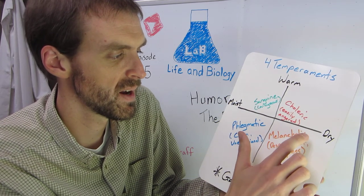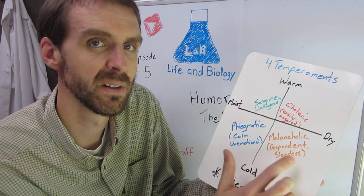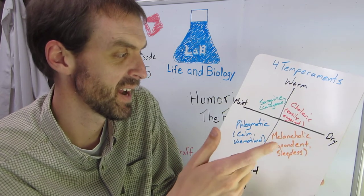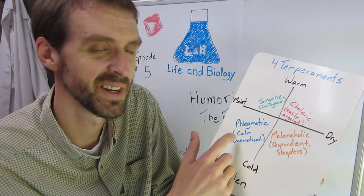You can also have melancholic, which is despondent or sleepless. And then cold and moist was phlegmatic. Who knows how to say it? But this would be calm and unemotional.